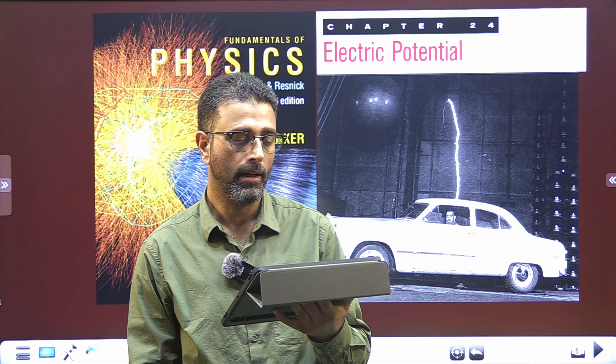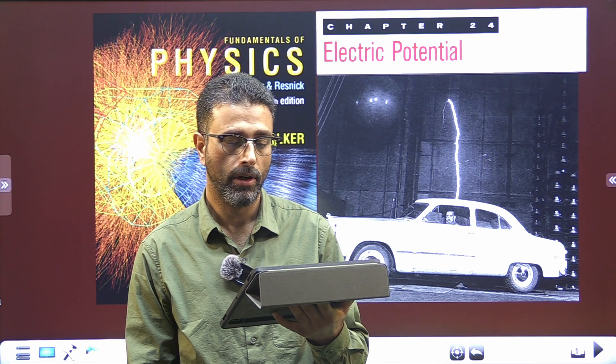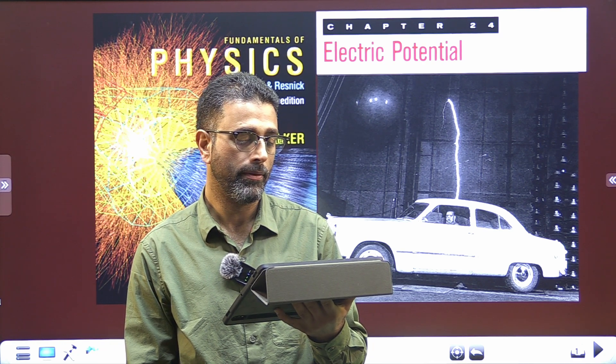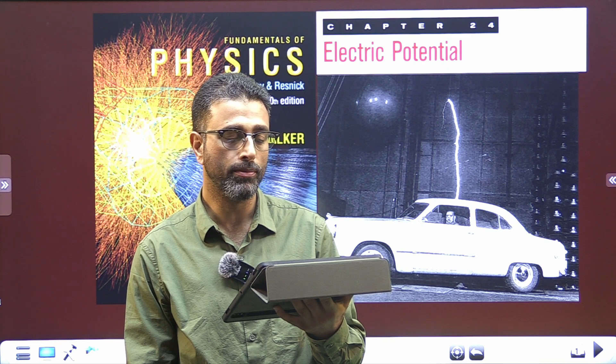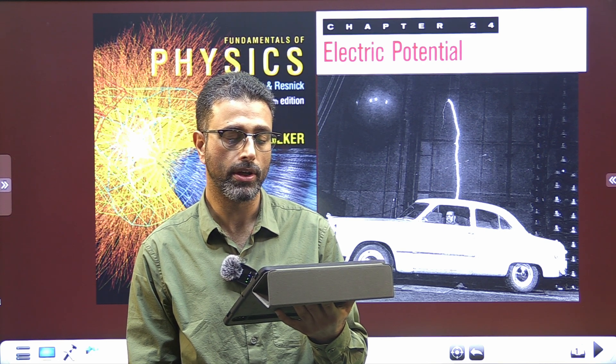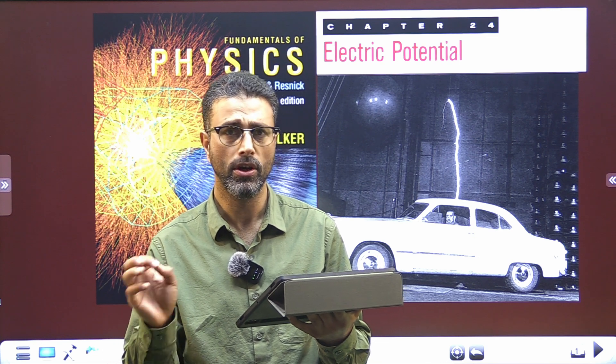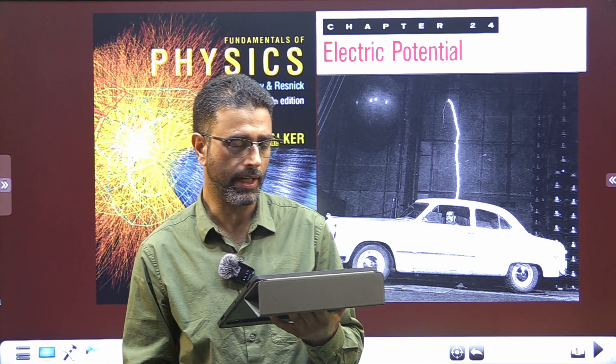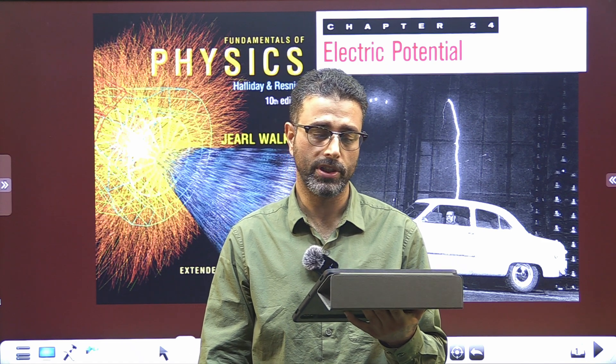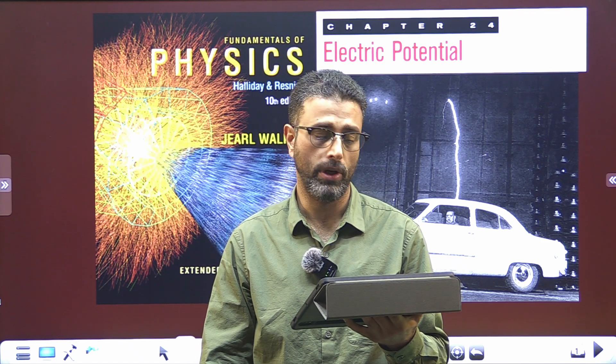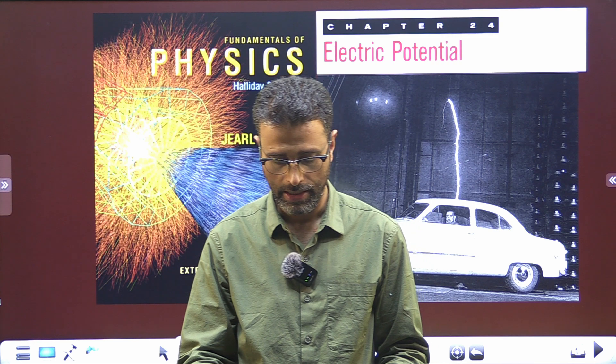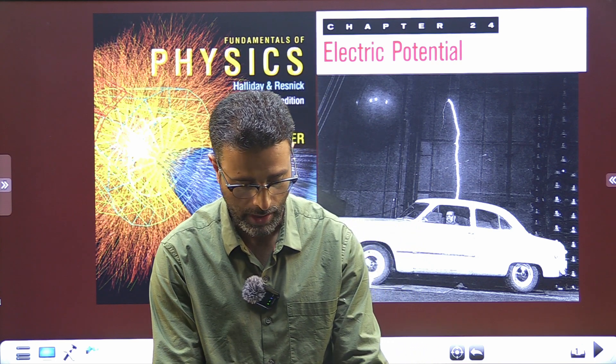through a circuit from one terminal to the other. Part A: How many coulombs of charge does this represent? So, 84 ampere-hours of charge, and we have to see how many coulombs that is. Part B: If this entire charge undergoes a change in electric potential of 12 volts, how much energy must be evolved?